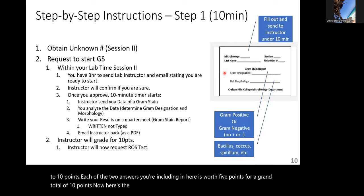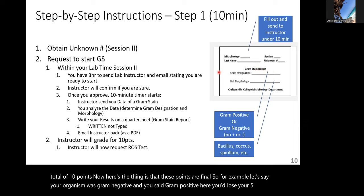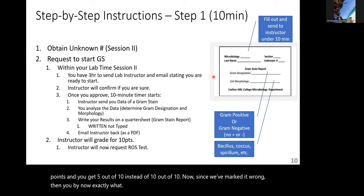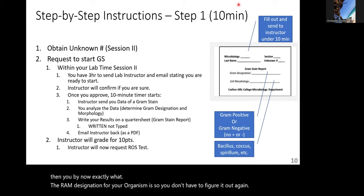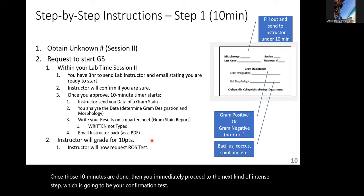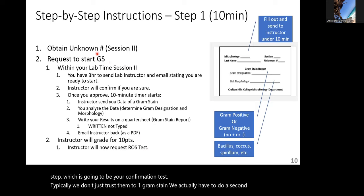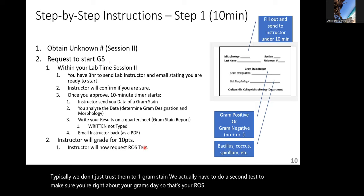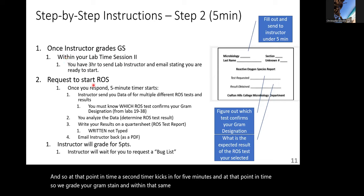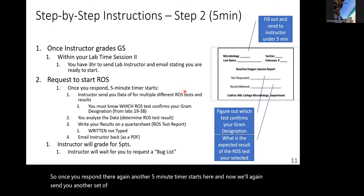These points are final. If your organism was Gram negative and you said Gram positive, you lose five points and get five out of ten. Once marked wrong, you know the correct Gram designation and don't have to figure it out again. After the 10 minutes, you immediately proceed to the confirmation test. We don't just trust one Gram stain — we do a second test, the ROS (reactive oxygen species) test. A second timer of five minutes kicks in.